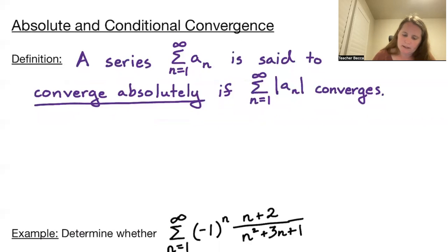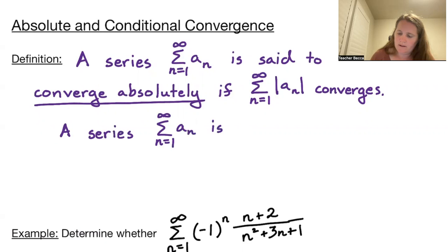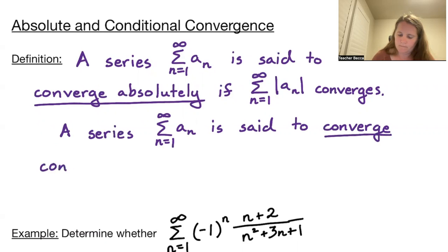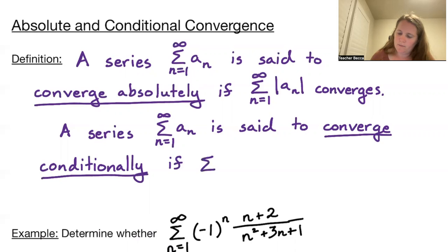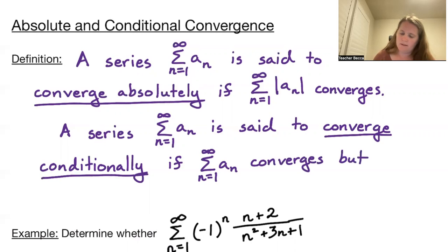A series is said to converge conditionally if the sum from n equals 1 to infinity of a sub n converges, but the sum from n equals 1 to infinity of the absolute value of a sub n diverges.